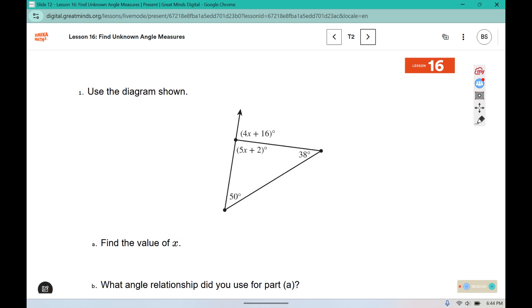For problem 1 it says use the diagram shown, find the value of x. So I know that in a triangle, the sum of the angles in a triangle are 180 degrees. So down here in part B, what angle relationship did you use for part A? I used what's called the triangle angle sum.